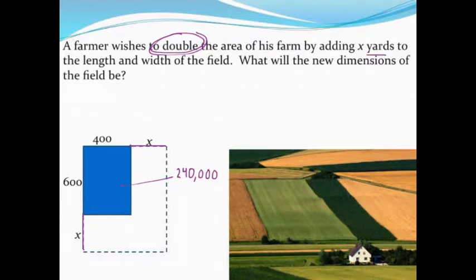Our new rectangle though is not 400 by 600. Our new rectangle is that long - so it's 400, we're adding x onto it, so I can express the new area as x plus 400 or 400 plus x.